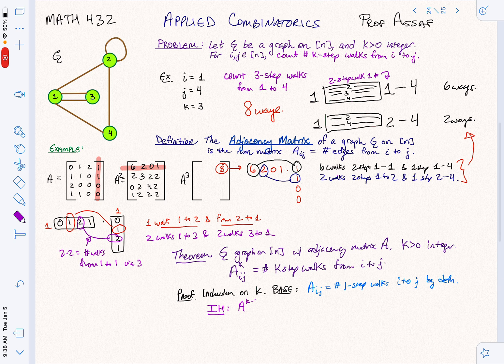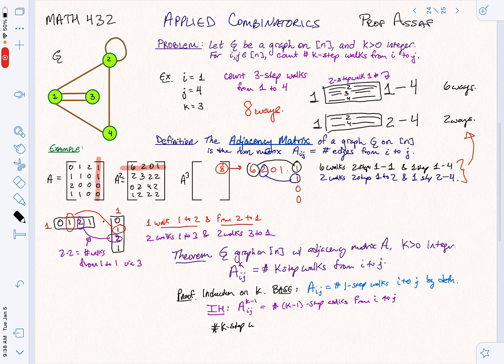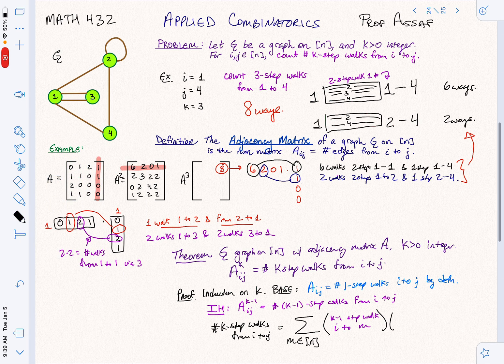So now we're going to get our inductive hypothesis. What's our inductive hypothesis? Our inductive hypothesis says that if we take A to the K minus one, IJ, this should equal the number of K minus one step walks from I to J. So now how do we count the number of K step walks from I to J? Think about how we did it before. What we want to do is walk somewhere and then take a final step. So we're going to sum over the penultimate position we could be in. We'll call that M. And what are we going to do?